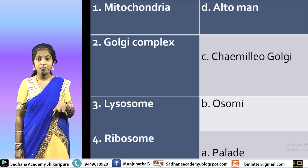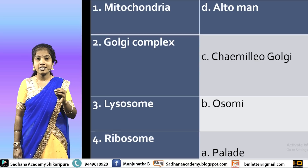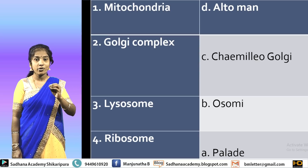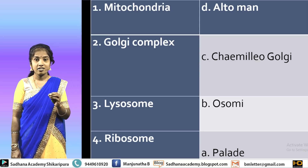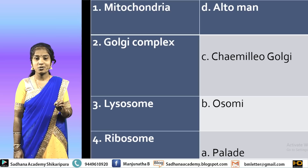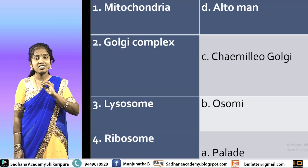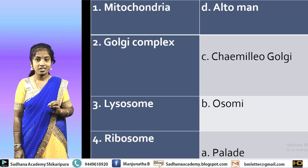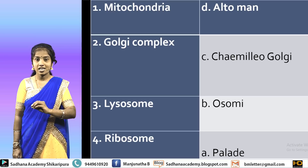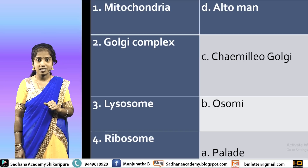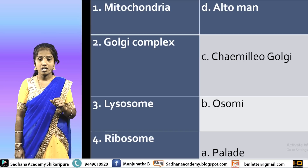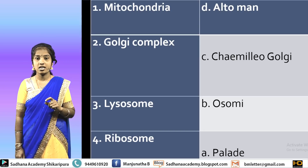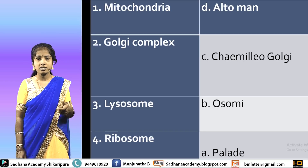Golgi complex — it is a little easy to remember the scientist's name because it is Camillo Golgi. So Camillo Golgi discovered the cell organelle Golgi complex. Lysosome — the suicide bag of a cell — rathmahathya sanchi.